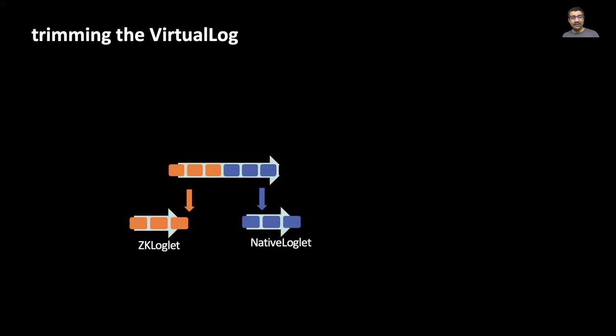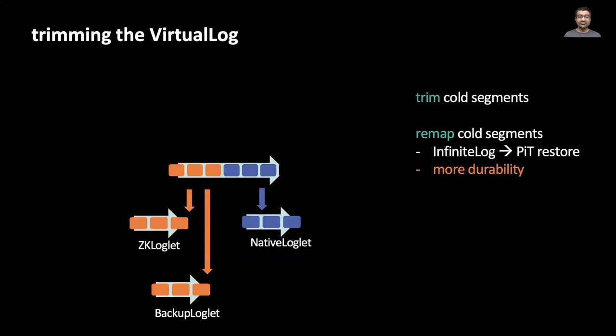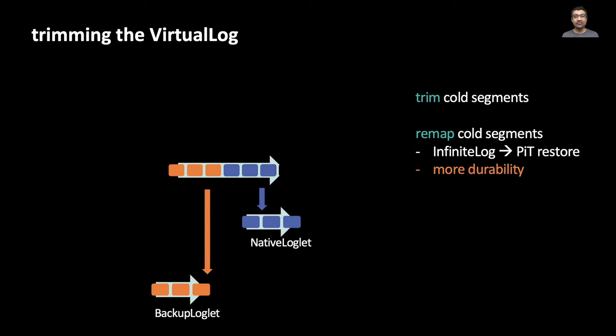One final detail about the virtual log relates to trimming. The virtual log exposes a first-class trim command. This gets relayed to the underlying loglets, and if a loglet is empty, then we change the mapping to remove it. But an alternative is to leverage the mapping itself to construct an infinite log. In this case, rather than trim and remove underlying loglets, we simply copy cold parts of the log over to a different loglet implementation, and we then remap the virtual log address space to point to a new loglet. By doing this, we can enable features such as fine-grained point-in-time restore.